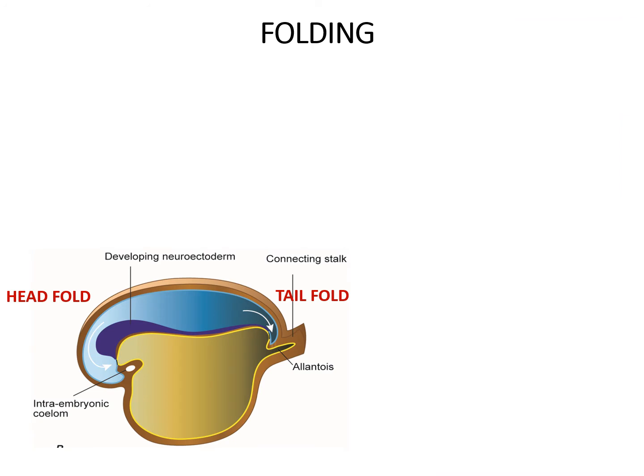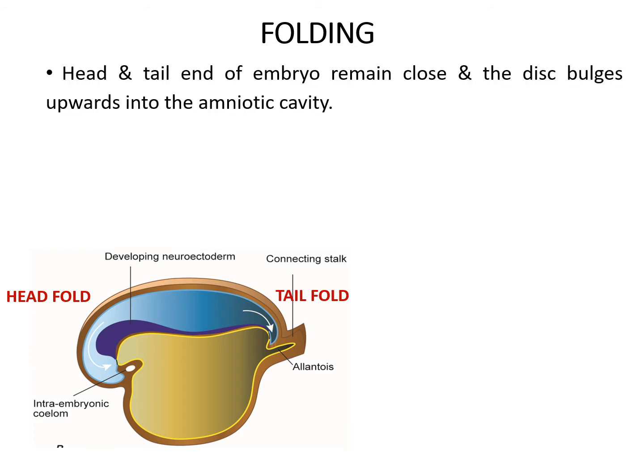The first major change during this period is folding. In the third week, the embryo was in the form of a flat tri-laminar germ disc. However, with multiplication of cells and formation of various tissues and organs, especially in the central part of the germ disc, the head and tail ends remain close together and the disc starts bulging upwards into the amniotic cavity. This results in a cephalocaudal folding in the median plane, with formation of the head fold and the tail folds.